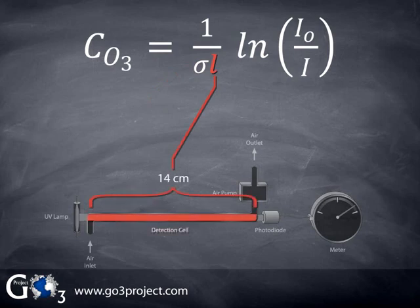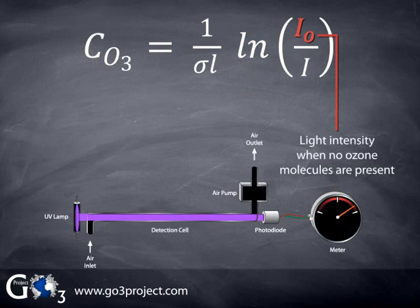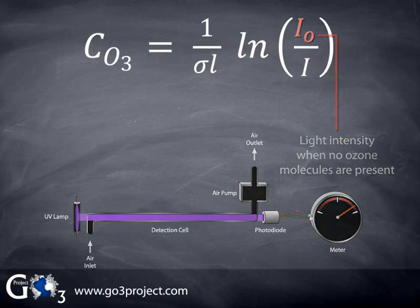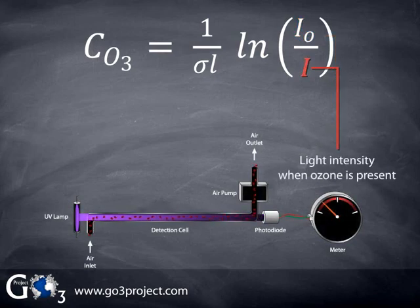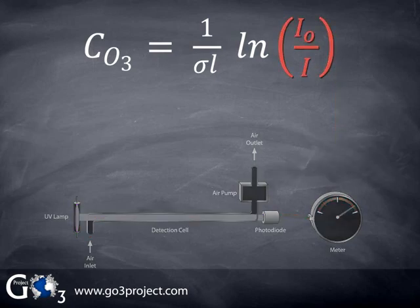L is the length of the detection cell. For the GO3 ozone monitor, L is 14 centimeters, or about 5 1⁄2 inches long. Ln is the natural logarithm, the logarithm to the base E. I0 or I sub-zero is the light intensity when no ozone molecules are present in the detection cell. I is the light intensity when ozone molecules are present. Note that I0 is always larger than I. So the ratio of I0 to I is always greater than 1, so the logarithm will always be positive. After measuring I0 with no ozone in the detection cell and I with ozone present, we can plug the two measured values into the Beer-Lambert law and calculate the ozone concentration.